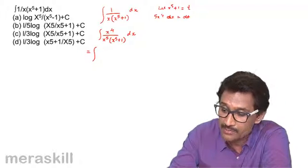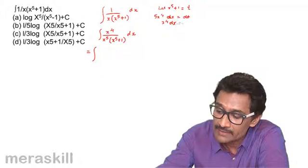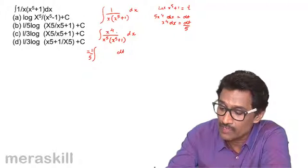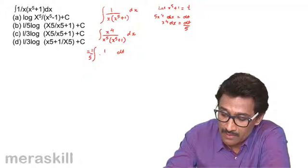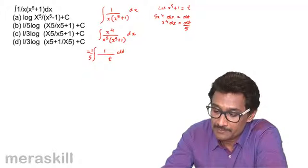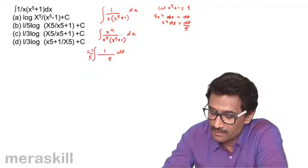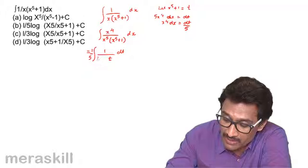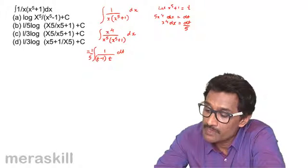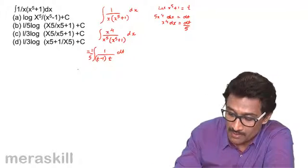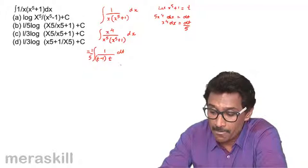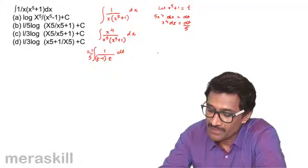So x raised to four dx is equal to dt by 5. This one by five goes out and we have dt. x raised to five plus one is t, and x raised to five is nothing but t minus one. So it's eventually one by five into one upon t minus one into one upon t.